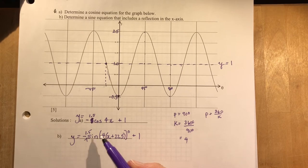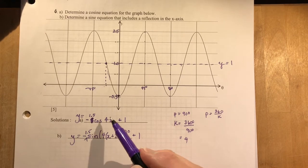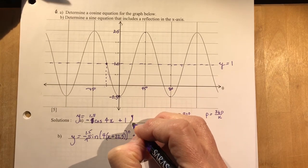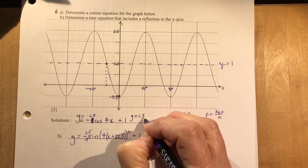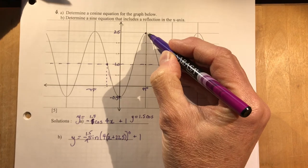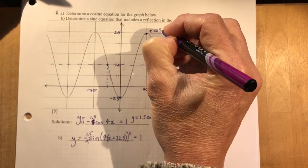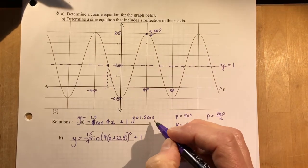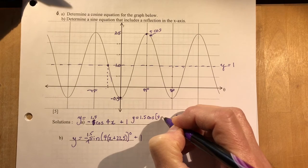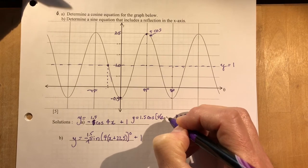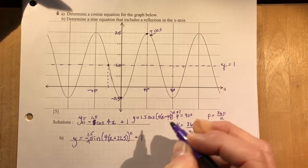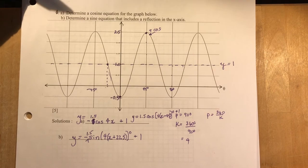We didn't change the k value, the axis, or the amplitude — just whether it's positive or negative. If they wanted a positive cosine function, you'd write y = 1.5cos(4(x - 45°)) + 1, because positive cosine starts at the highest point, shifted right 45°. So there are three different equations for exactly the same function.